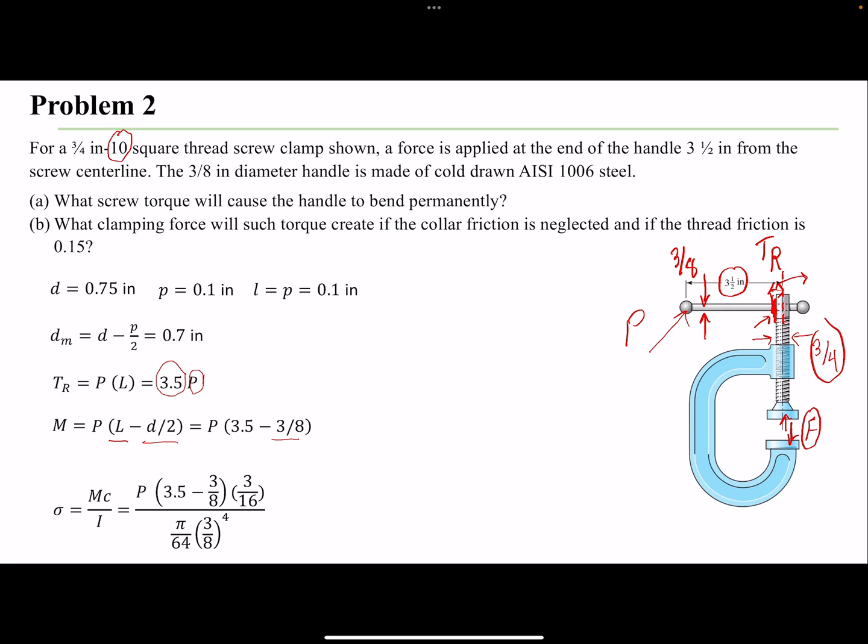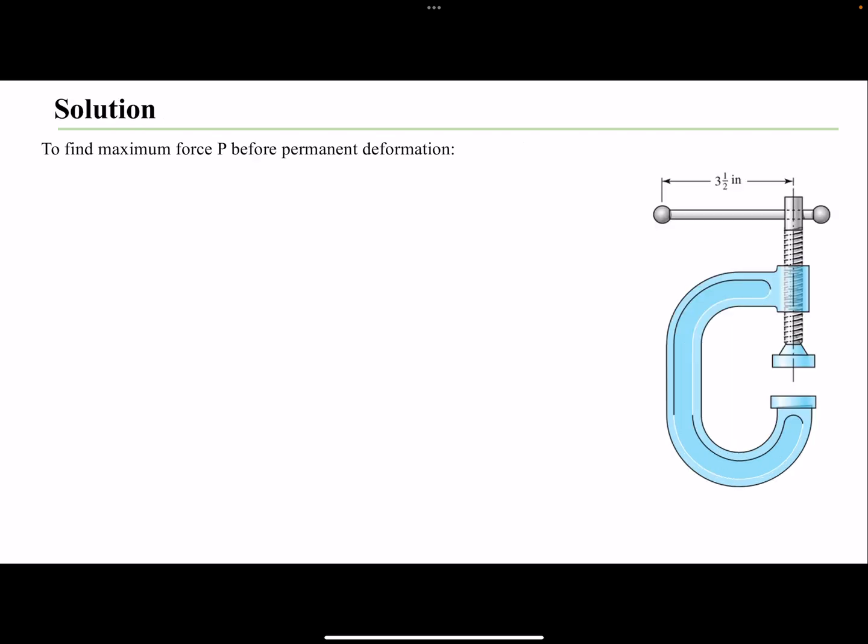So we found the stress that would be caused by the force at the edge here. To find the maximum stress that we can have and then maximum force that we can apply, we need to look at the yield strength of our bar. The material property is given, so we can look up the yield which is 41 ksi. Setting our stress to the maximum possible stress which is strength, we can find the value of force.